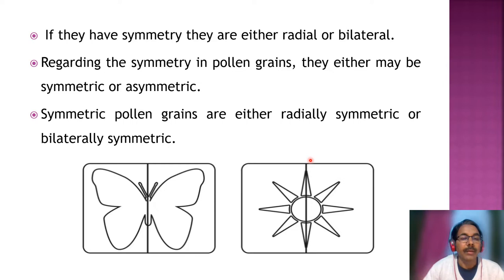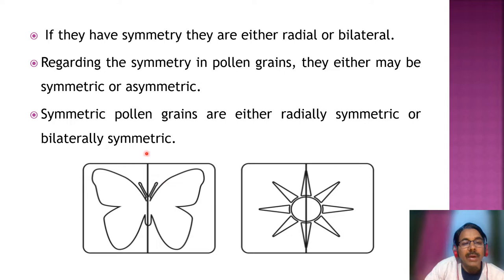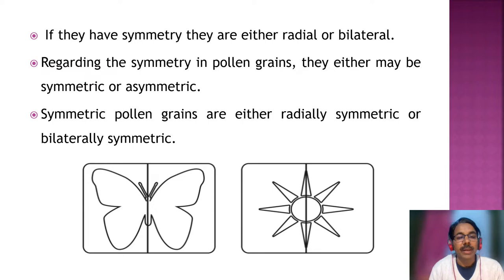In bilateral symmetry, you can see a diagram of a butterfly where you can draw a line from only one plane that divides it into two equal parts. If you draw a line from here to here, it divides the butterfly into two equal parts that are symmetric to each other and like each other. So symmetry is responsible for the beauty of nature or the beauty of objects.